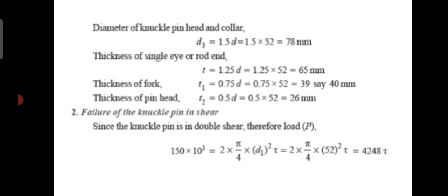Failure of the single eye or rod end in tension. The rod end may fail in tension due to the load. The formula is P equal to (d2 − d1) × t × sigma T. Substituting P equal to 150 × 10³, d2 equal to 104, d1 equal to 52, and t equal to 65, we find sigma T equal to 44.4 N per mm², that means 44.4 MPa.